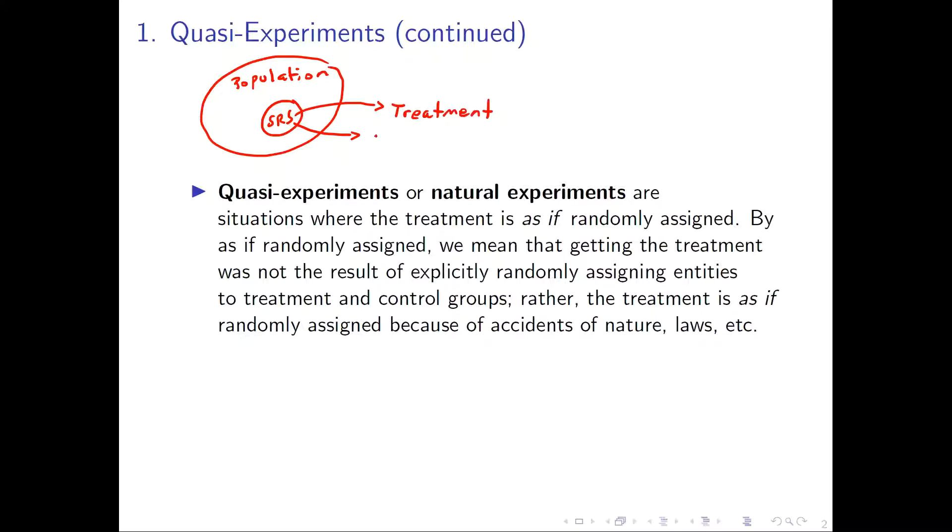Those in the control group do not get the treatment. This is for experiments, and it's super important that the choosing of the simple random sample is random and that the assignment of treatment also is random. So this will mean that the treatment is not correlated with any other variable.